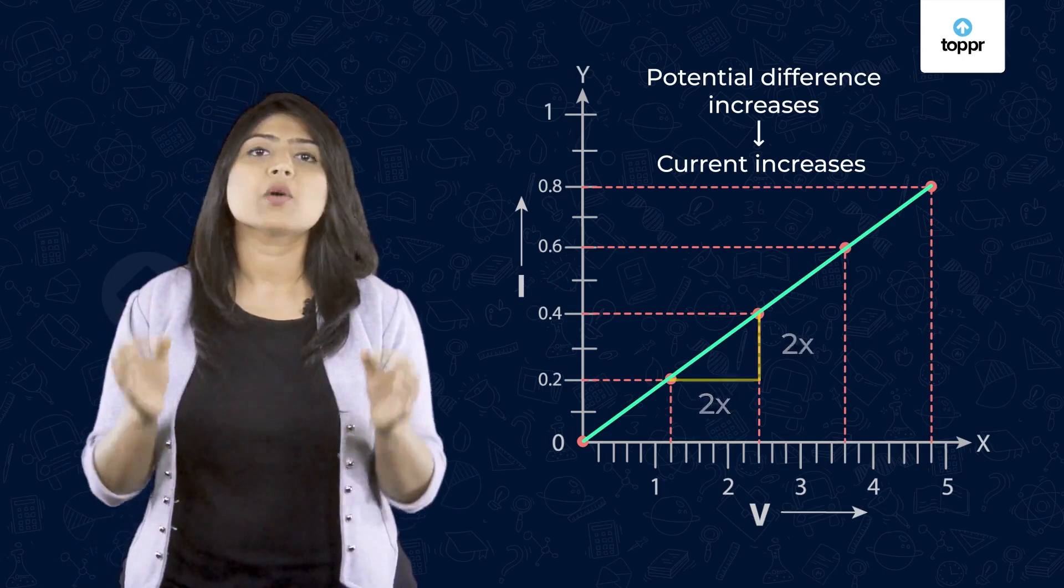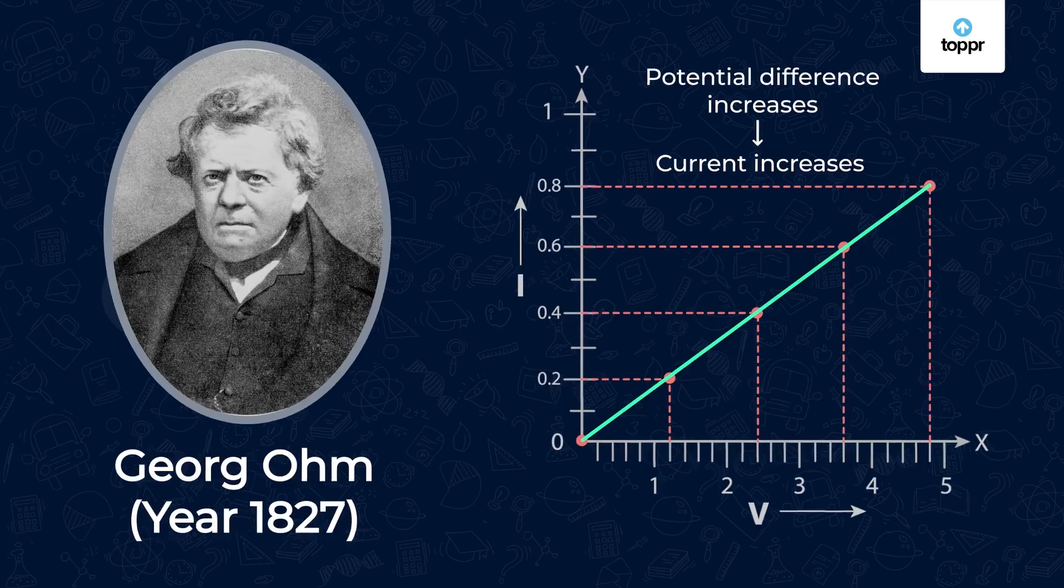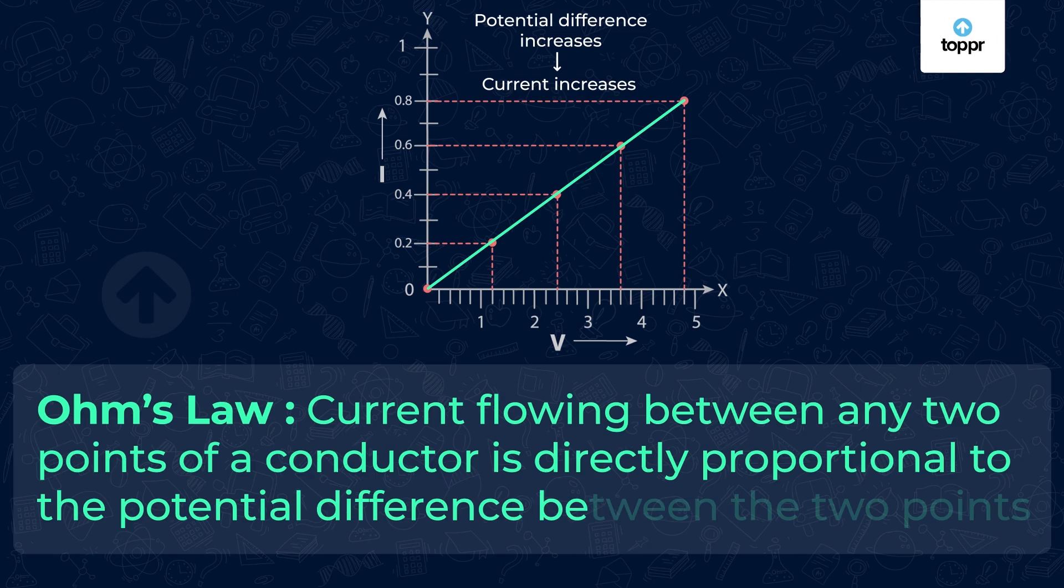This relationship was discovered by a German scientist Georg Ohm in the year 1827 and this finding is hence known as Ohm's law. The law states that the current flowing between any two points of a conductor is directly proportional to the potential difference between the two points.